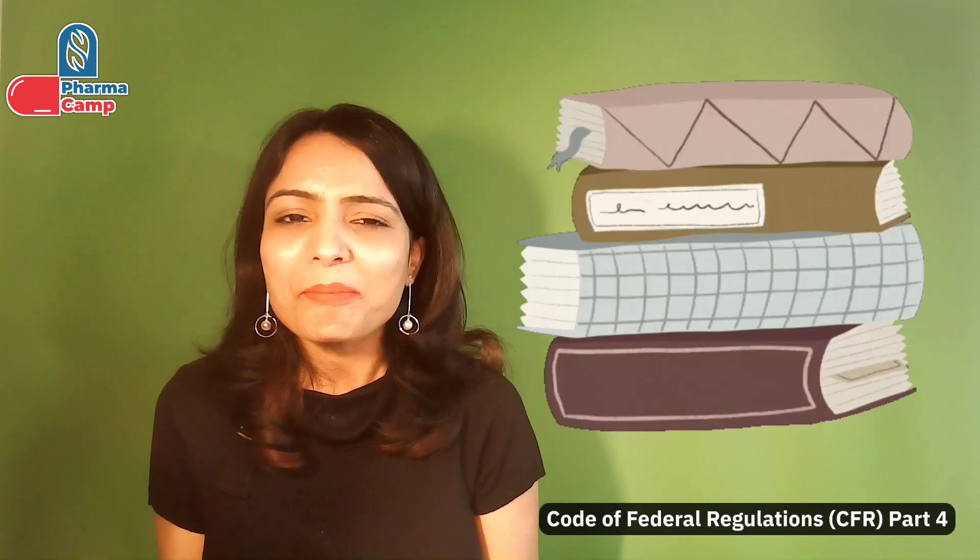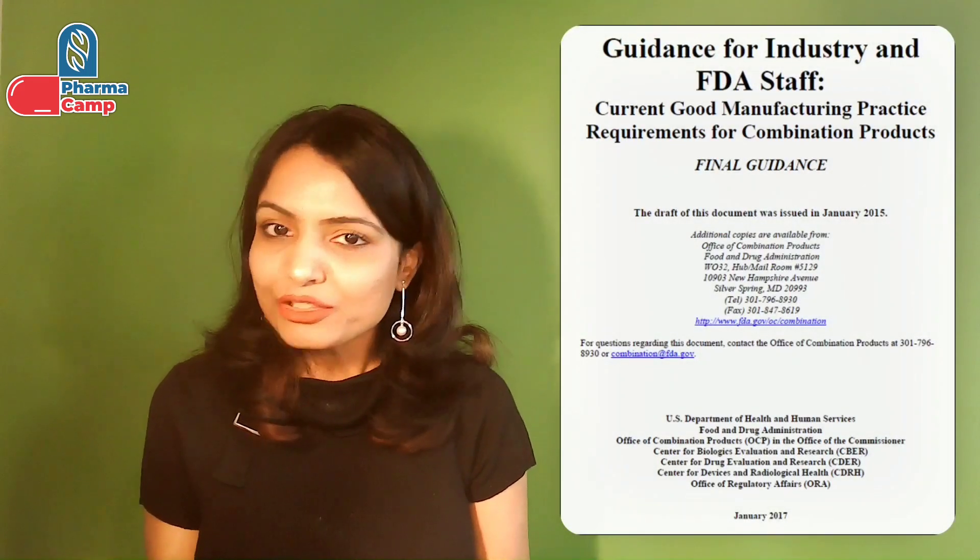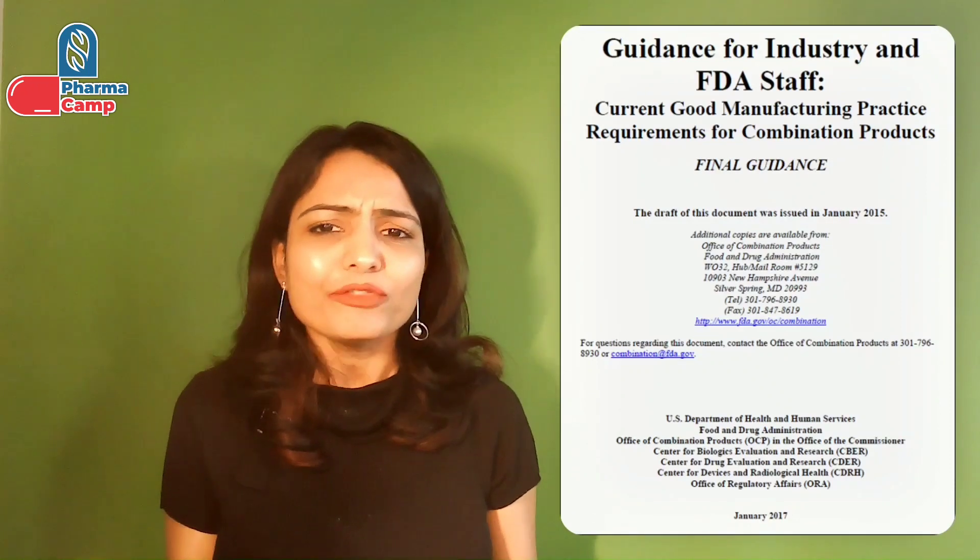Let's start first with the US. As I explained in detail in the first video of this series, in the US there is a separate regulation related to combination products. Combination products are regulated by FDA — CDER, CBER, or CDRH — depending on the primary mode of action of the product. The GMP requirements for combination products in the US are outlined in CFR Part 4, which specifies that combination products must comply with both drug and device GMP requirements.